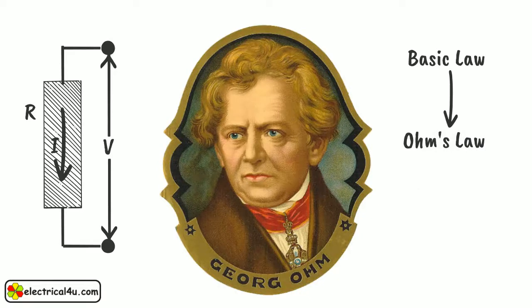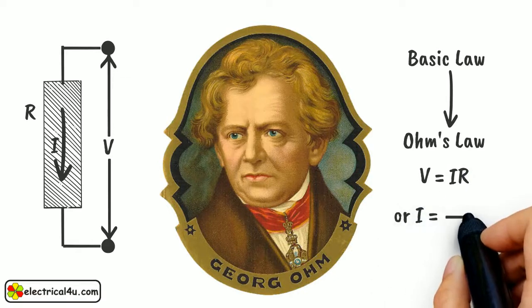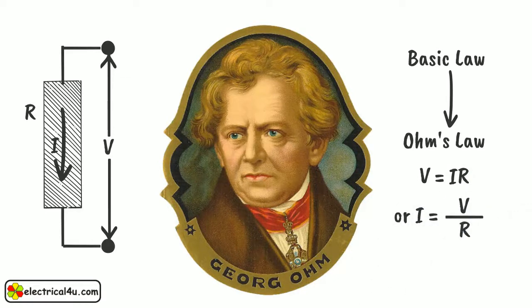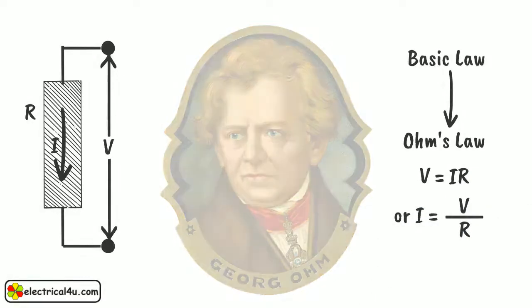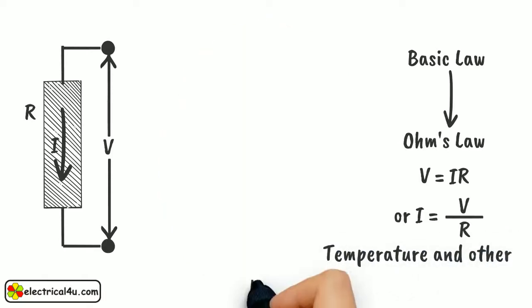According to Ohm's law, V equals I R, or I equals V by R. This relation will hold well, provided that the temperature and other physical conditions do not change.